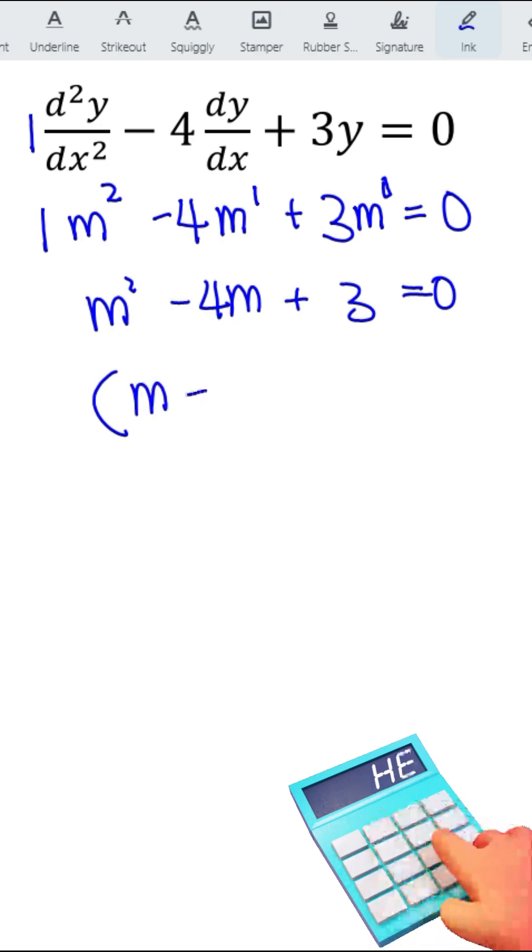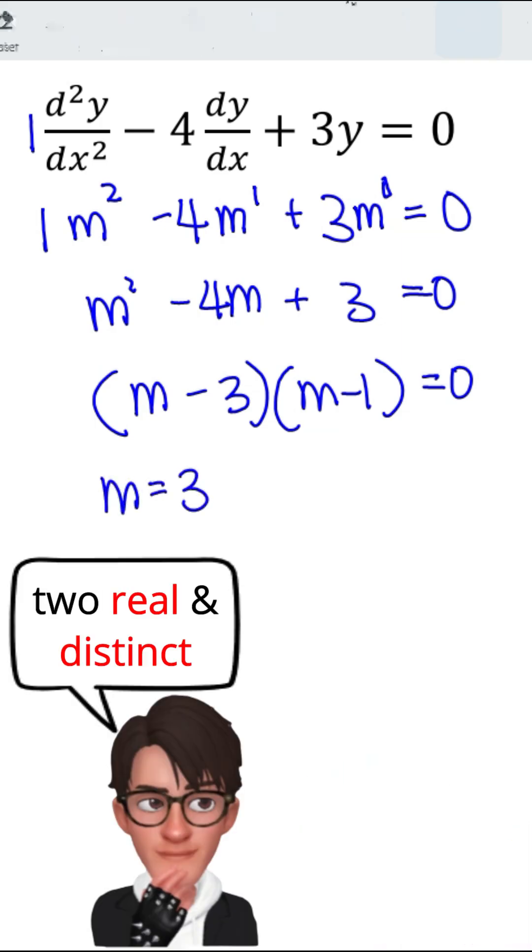We should have m minus 3 multiplied by m minus 1 is equal to 0. In other words, m equal to 3 and m equal to 1 are the roots.